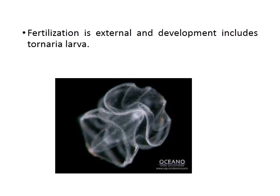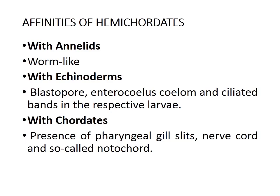Fertilization is usually external and development includes tornaria larvae. Hemichordata shows affinity with Annelida in having a worm-like body, which is a characteristic feature of Annelida. The blastopore formed during embryogenesis is similar to the blastopore formed in Echinodermata, and the ciliated bands in the respective larvae are also characteristic of echinoderms. With Chordata, the similarities include the presence of pharyngeal gill slits and nerve chord, whereas the notochord was once considered a shared character of Balanoglossus with Chordata.